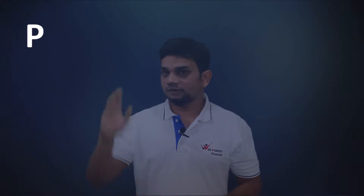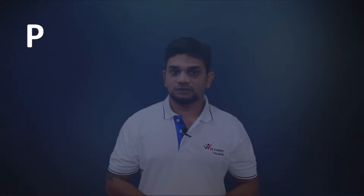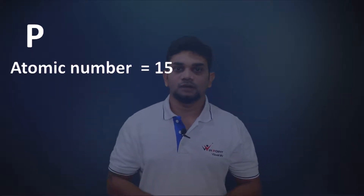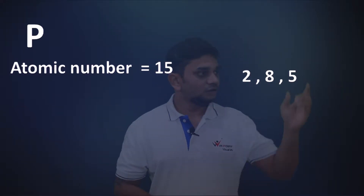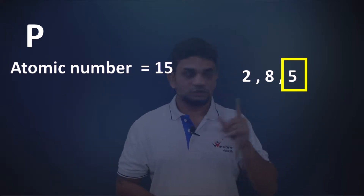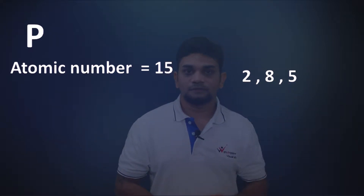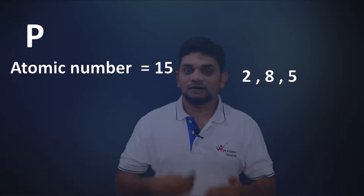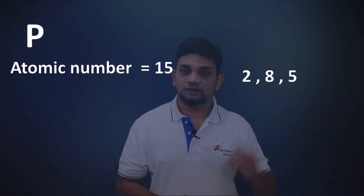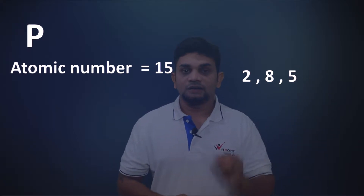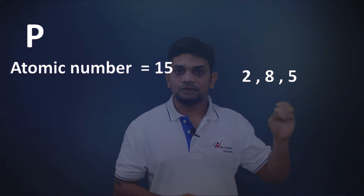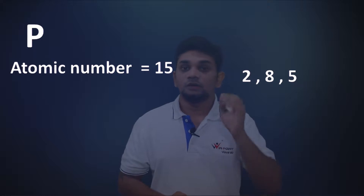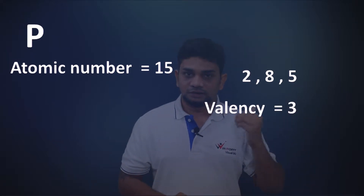For example, phosphorus. The symbol of phosphorus is P. The atomic number of phosphorus is 15. Its electronic configuration will be 2, 8, 5. The outermost shell is also known as the valence shell. In the valence shell there are five electrons. Atoms participate in chemical reactions to complete the octet — they need eight electrons in the outermost shell to be stable.